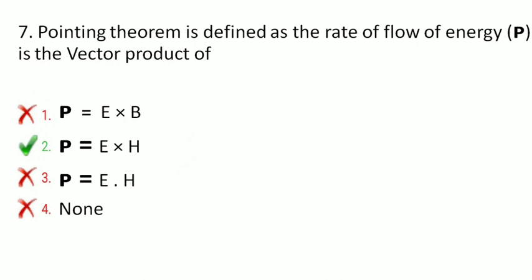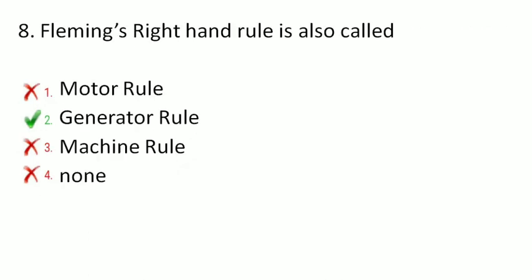Next is: Fleming's right-hand rule is also called as — motor rule, generator rule, machine rule, or none? The correct option is generator rule. Fleming's right-hand rule is called the generator rule.